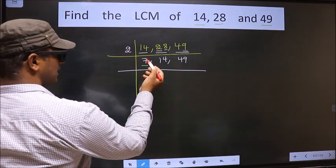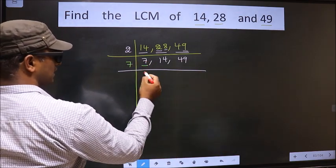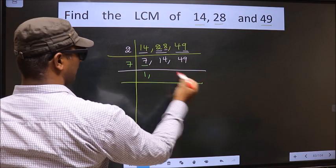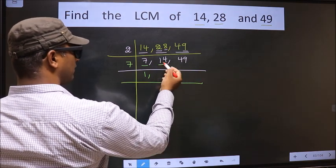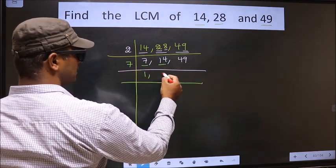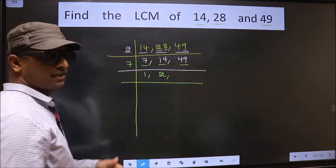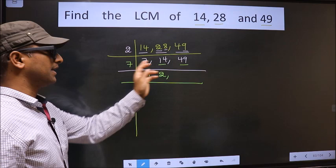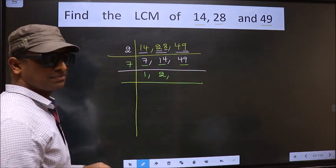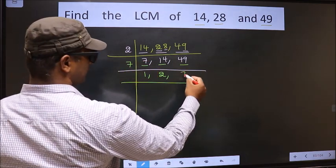Now here we have 7, 7 is a prime number. So 7, 1 is 7. The other number 14, when do we get 14 in 7 table? 7, 2 is 14. The other number 49, when do we get 49 in 7 table? 7, 7 is 49.